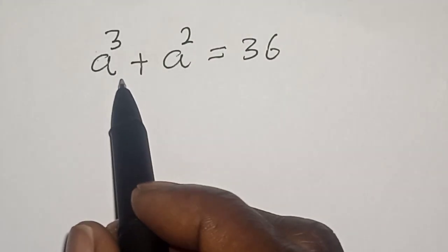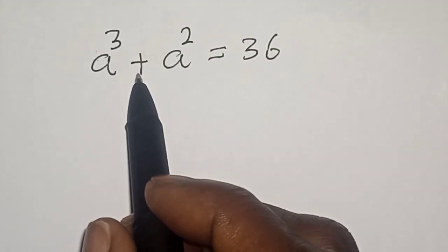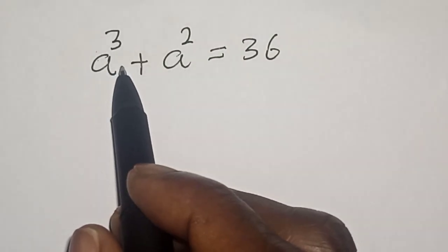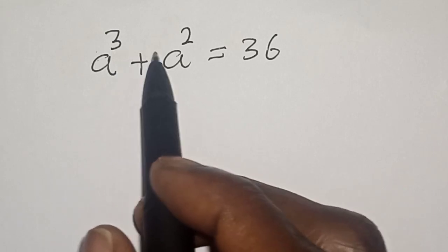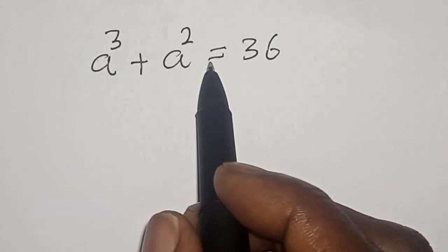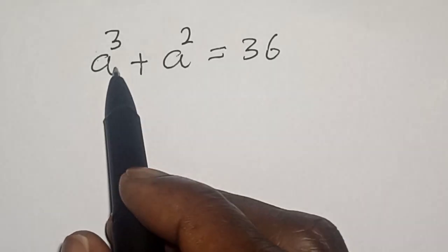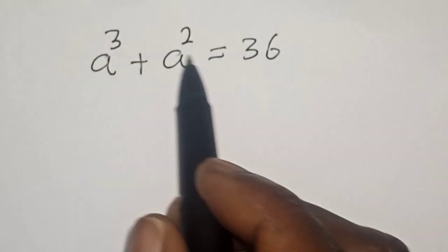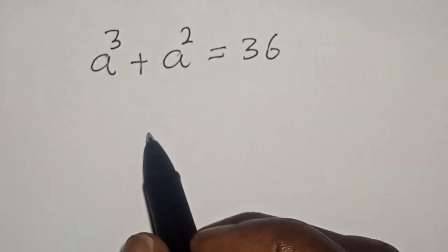Welcome to MathGist. In this class, we want to find the value of a from this given equation: a raised to power 3 plus a squared is equal to 36.